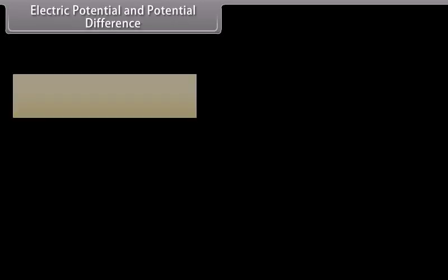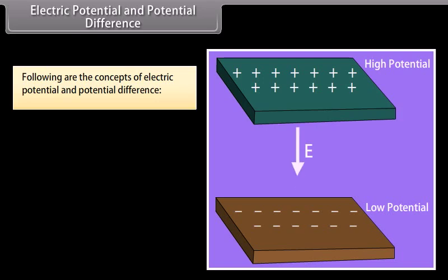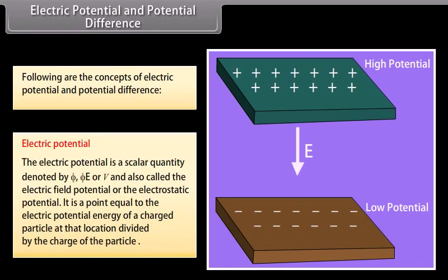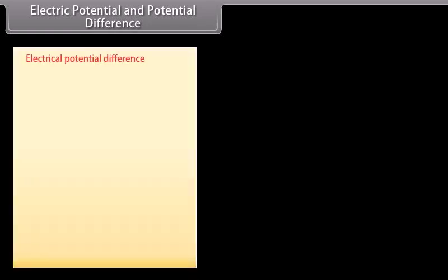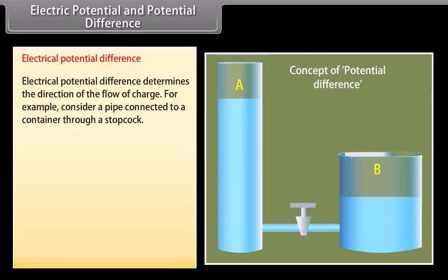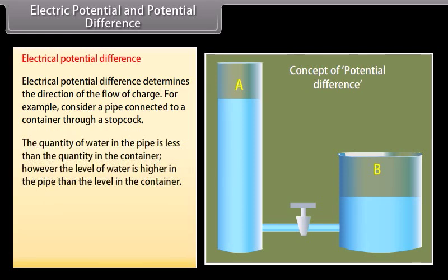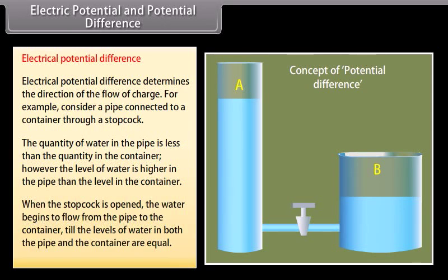Electric potential and potential difference. Electric potential is a scalar quantity denoted by E or V. It is a point equal to the electric potential energy of a charged particle at the location divided by the charge of the particle. Electrical potential difference determines the direction of the flow of charge. For example, consider a pipe connected to a container through a stop cork. The quantity of water in the pipe is less than the quantity in the container. However, the level of water is higher in the pipe than the level in the container. When the stop cork is opened, the water begins to flow from the pipe to the container until the levels of water in both the pipe and the container are equal. This determines that it is not the quantity of water but the level of water which decides the direction of flow. It is the potential difference that is responsible for the flow of water.